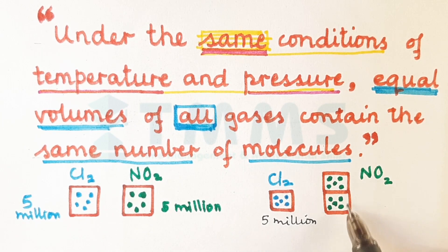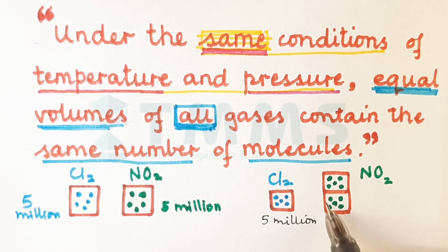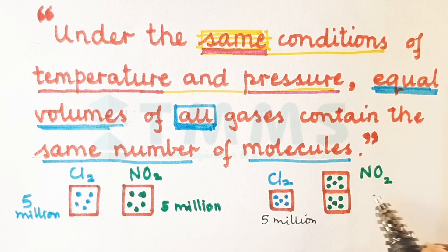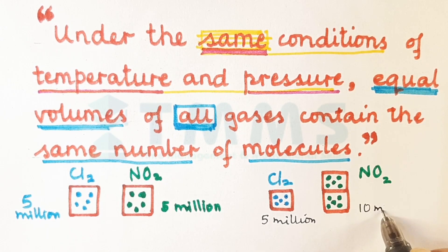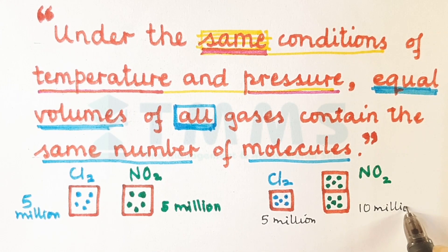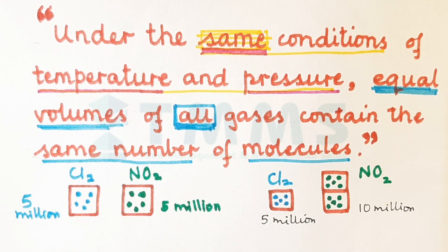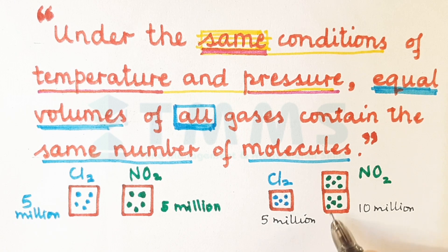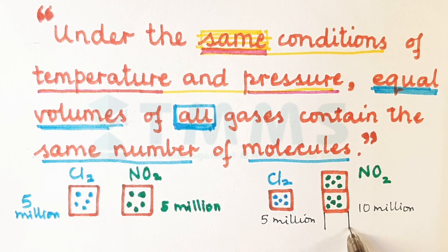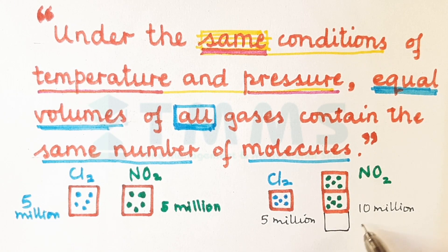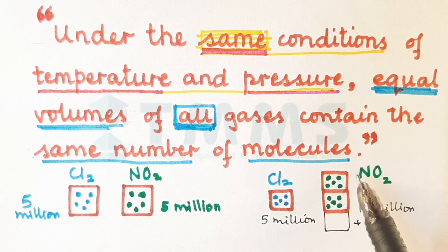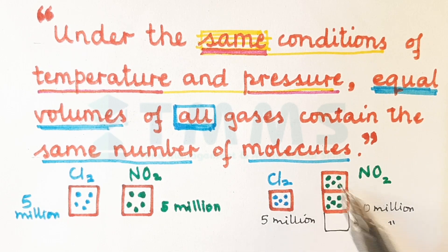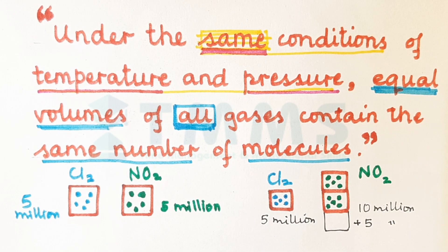And this, which is also the same volume as this, this also will have 5 million. So you will see total there are 10 million molecules of nitrogen dioxide. So if I were to put another box over here, that another box would have again another 5 and then we will have again plus 5 million. So did we understand equal volumes will have the same number of molecules.